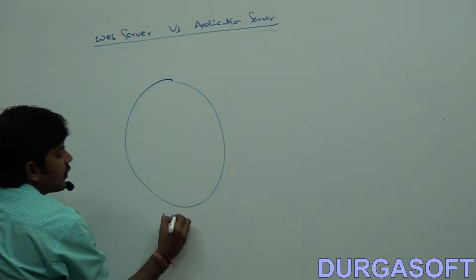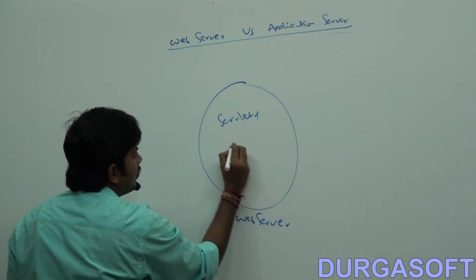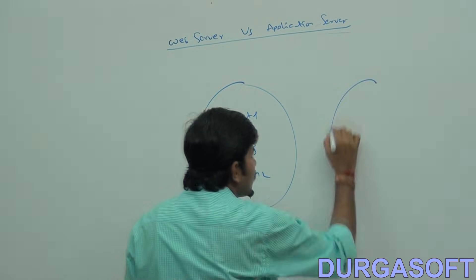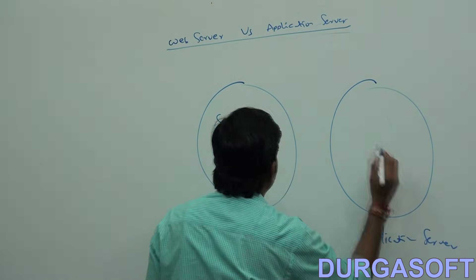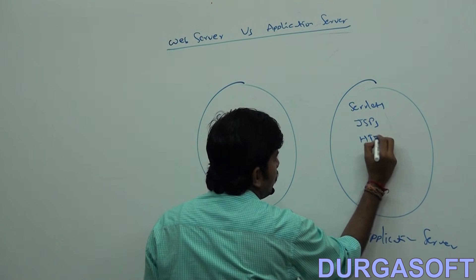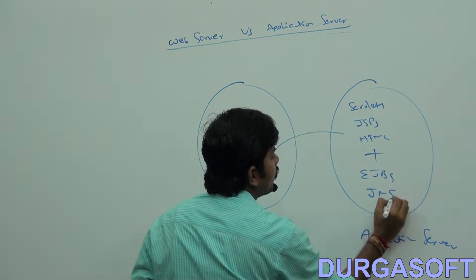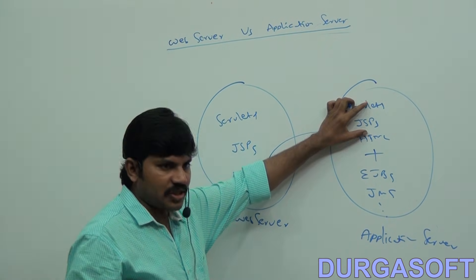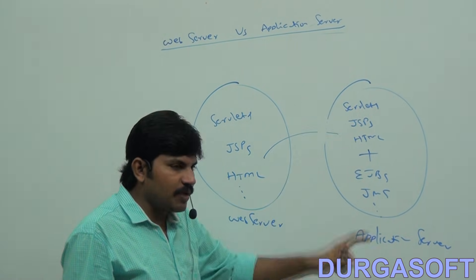Web server can provide support for servlets, JSPs, and HTML pages. Application server can provide support for servlets, JSPs, and HTML — all these things — plus EJBs and JMS components. Now, servlets and JSPs are supported by both web server and application server.